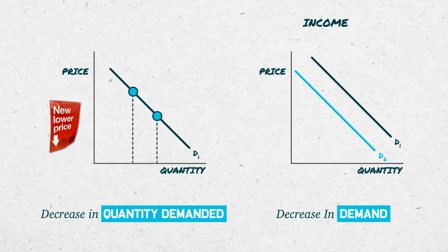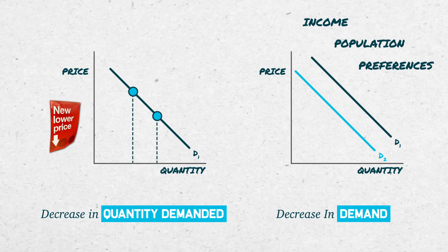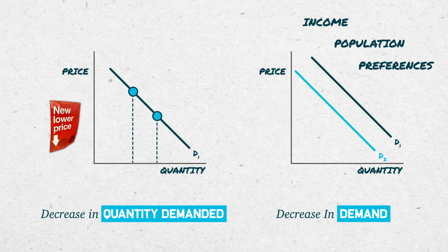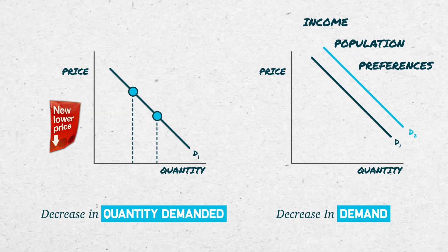A change in income, population, tastes, etc. — none of these are measured on either axis, and thus we'll see a shift in the entire demand curve.